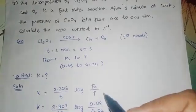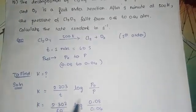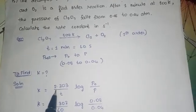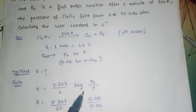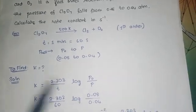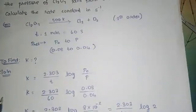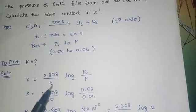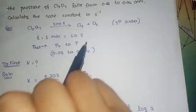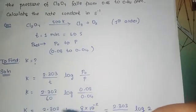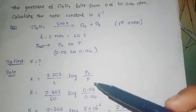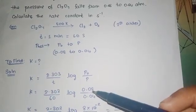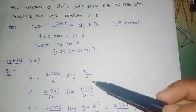P₀ is equal to 0.08 atm and P is equal to 0.04 atm. We will calculate by using the formula: k is equal to 2.303 divided by t, log of P₀ by P. So k equals 2.303 divided by 60 seconds, log of 0.08 divided by 0.04.